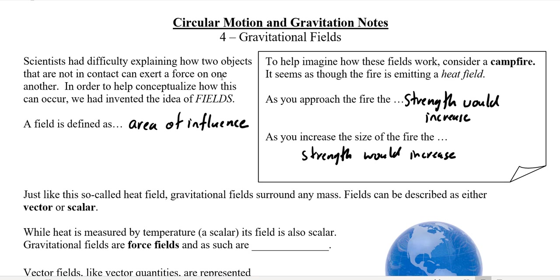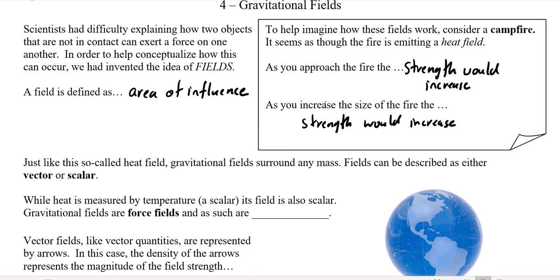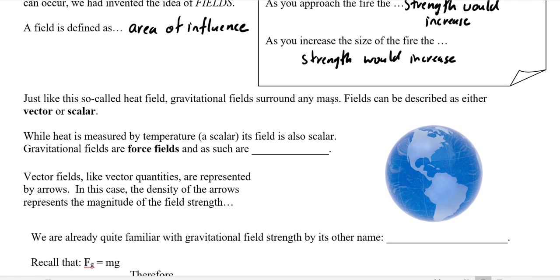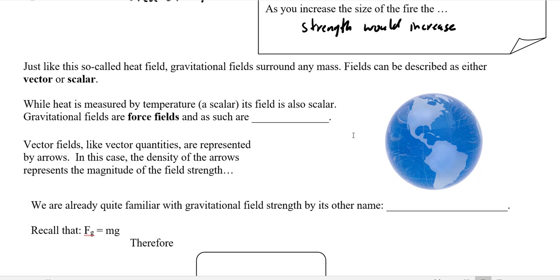If you have two, three, five, or twenty protons, those might be surrounded by stronger and stronger fields. Gravitational fields surround the Earth, and fields can either be vector or scalar.